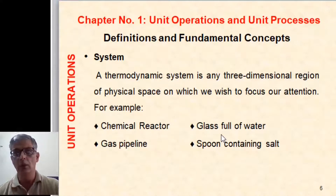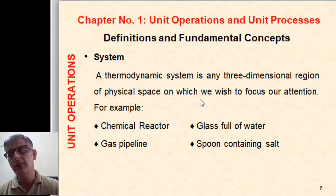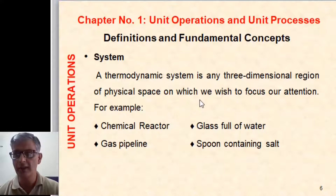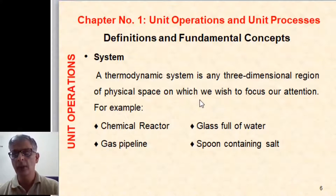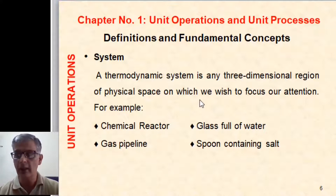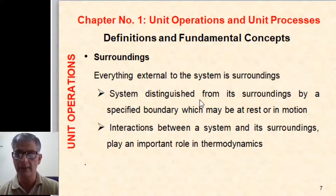What is a system? A thermodynamic system is any three-dimensional region of physical space on which we wish to focus our attention. For example, a chemical reactor, a glass full of water, a gas pipeline, or a spoon containing salt — these are some examples of a system.